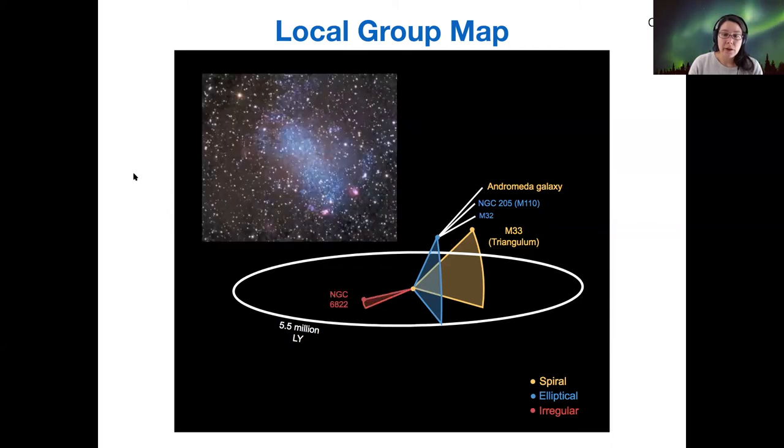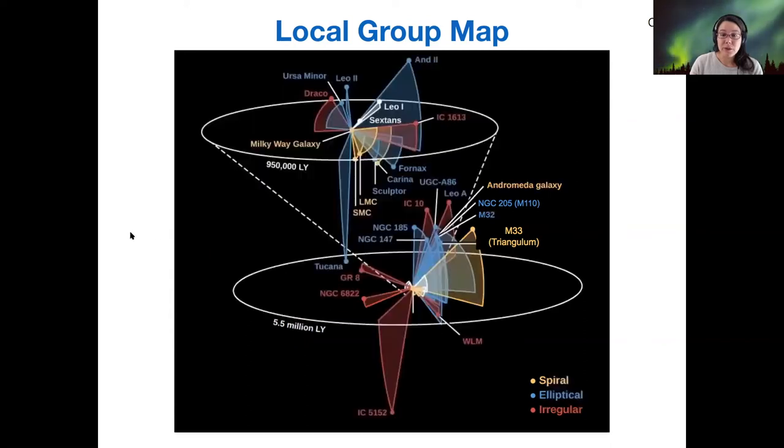There are also a handful of other galaxies like the irregular NGC 6822. If you look at the entire map together, we can pull a few pieces of information out of this right away.